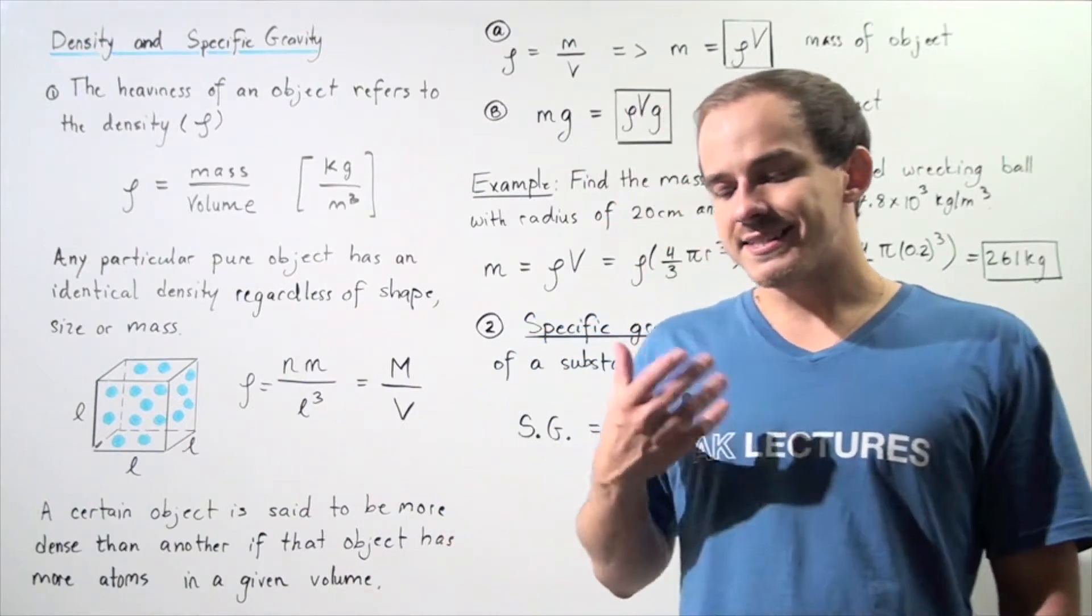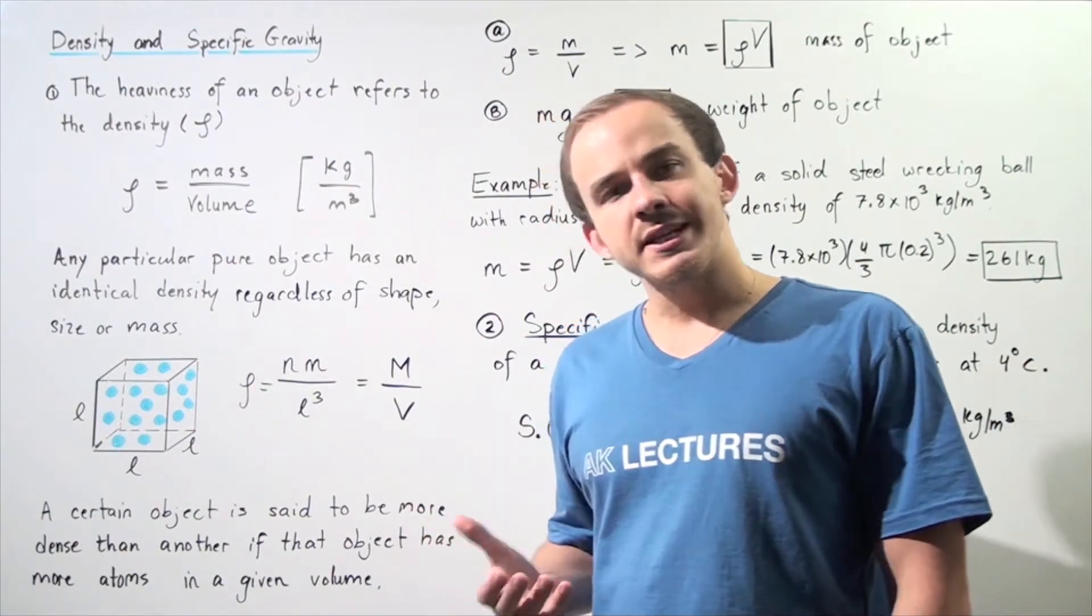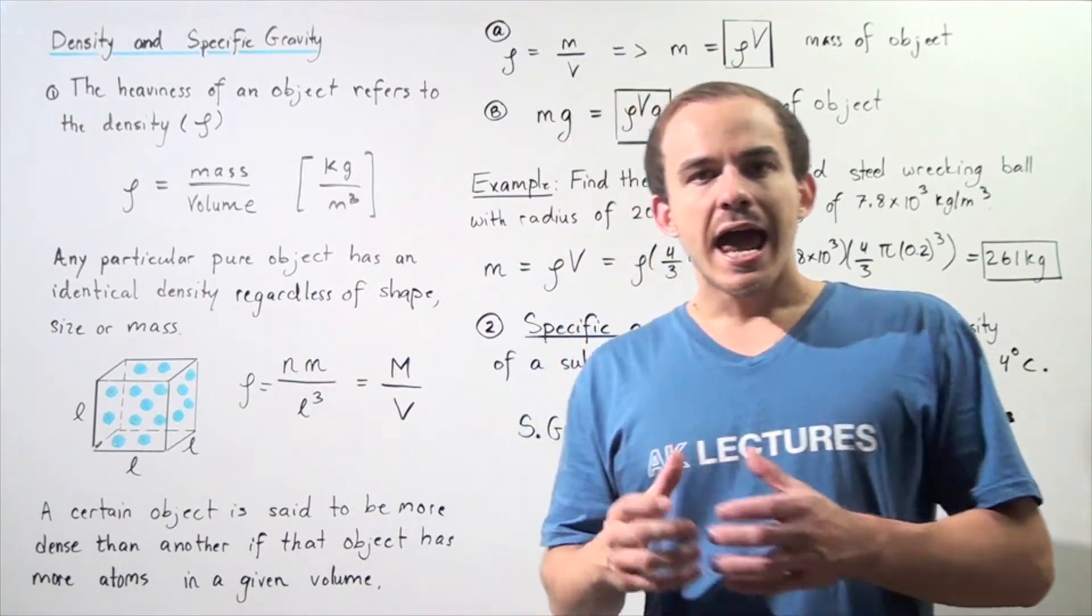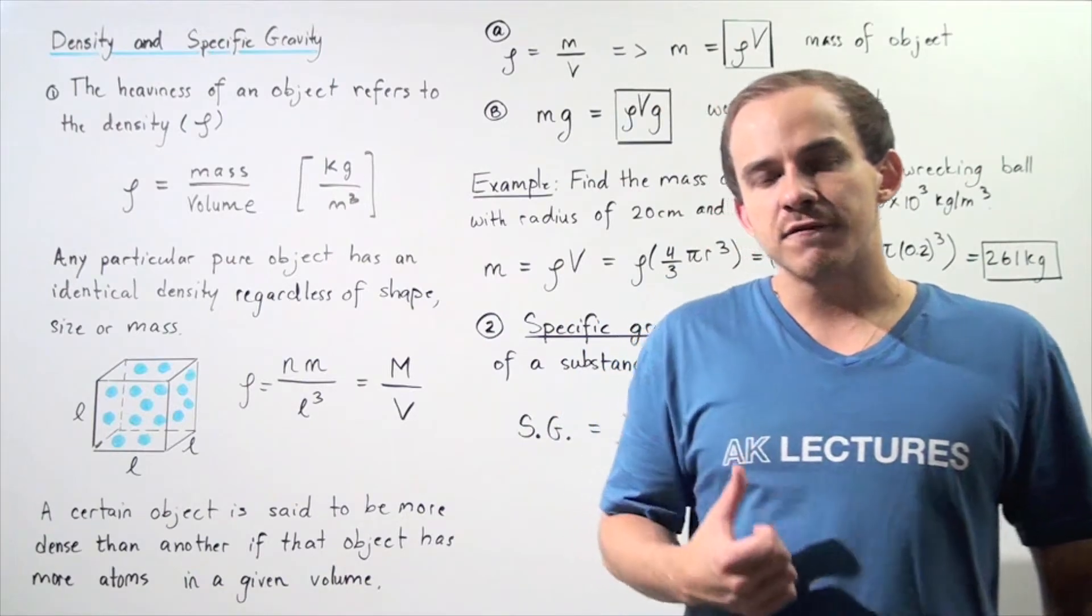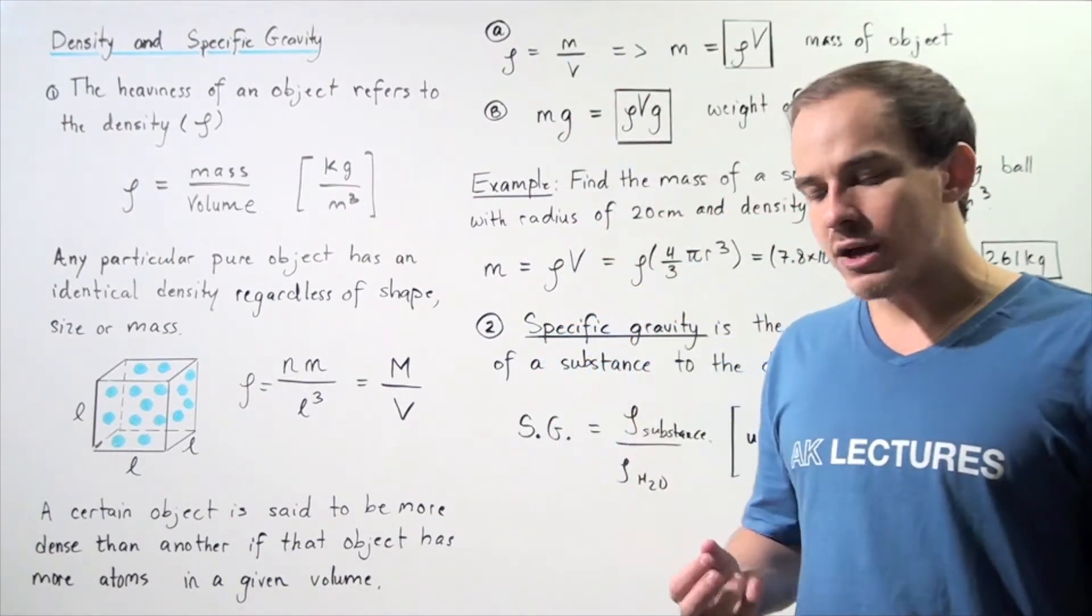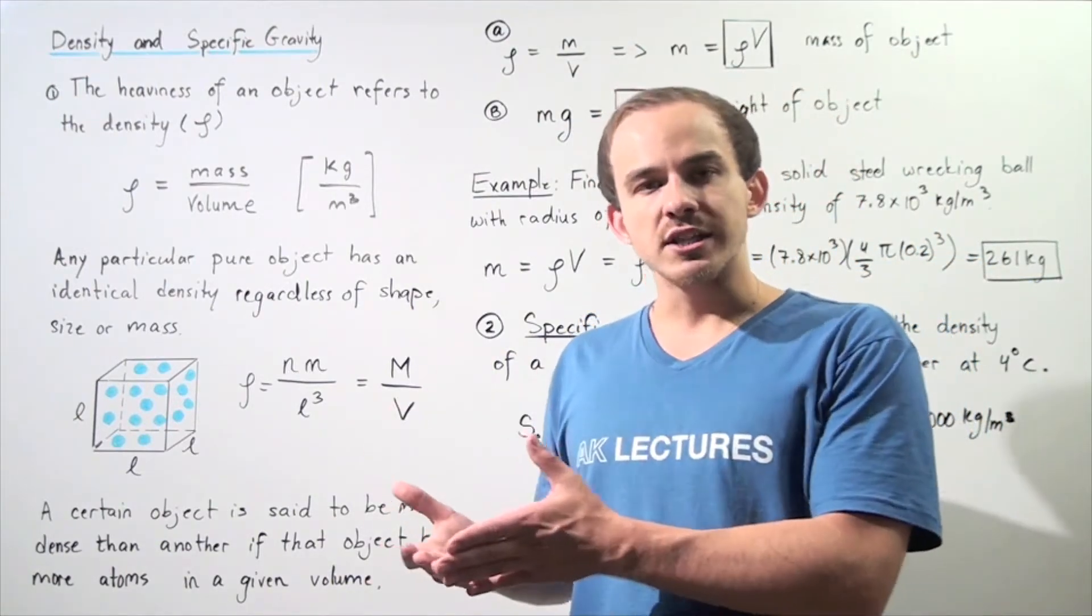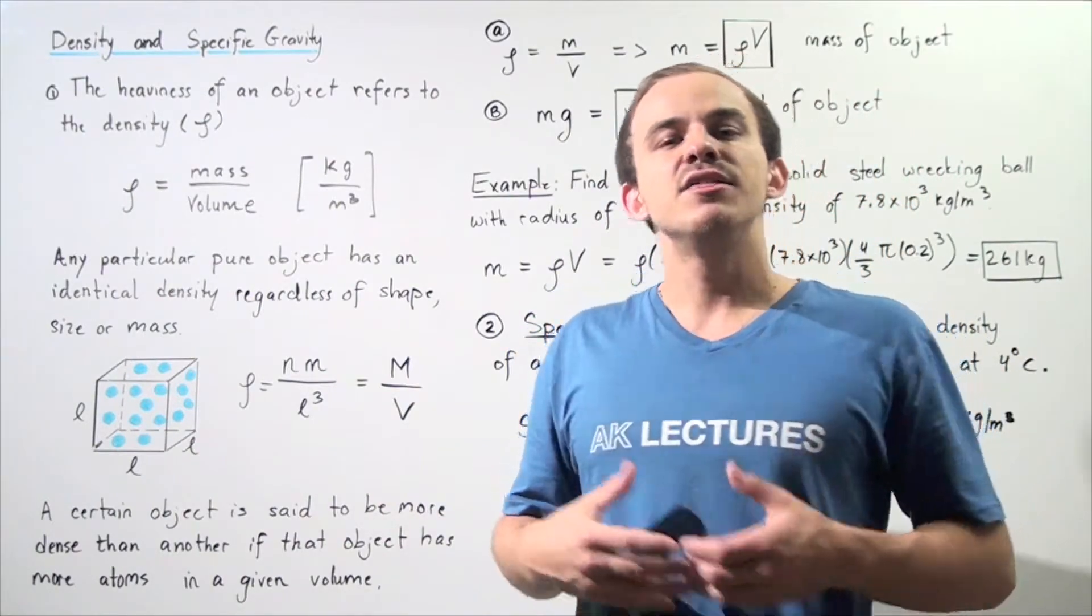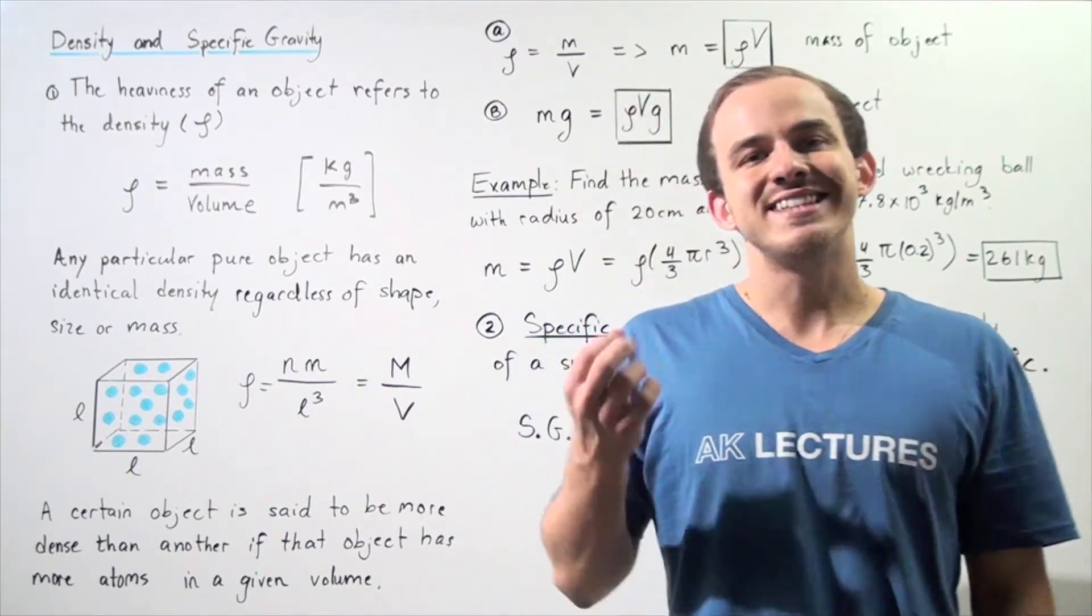It is sometimes said that steel is heavier than wood. That statement cannot actually be true because if we take a very small piece of steel and a very large piece of wood, the wood will have a larger mass and therefore a higher weight. So what do people mean when they say a certain object is heavier than another? They actually mean that object is more dense than the second object. Heaviness simply refers to the object's density.